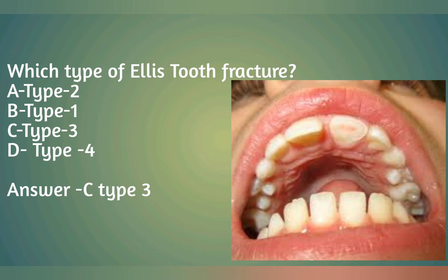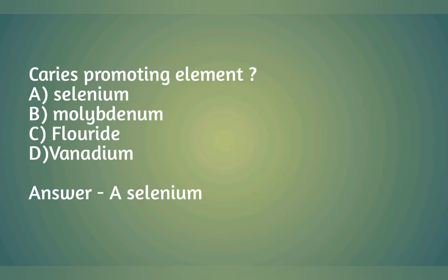Ellis tooth fracture options: A) Type 2, B) Type 1, C) Type 3, D) Type minus 4. Answer: C) Type 3. Caries promoting element: A) selenium,